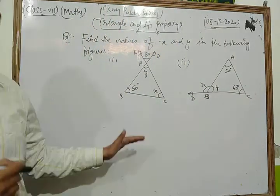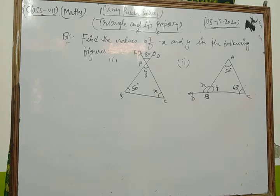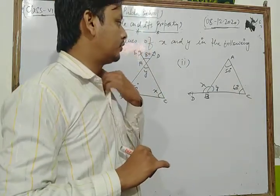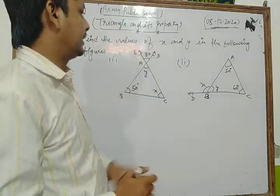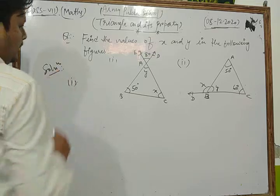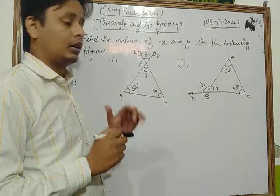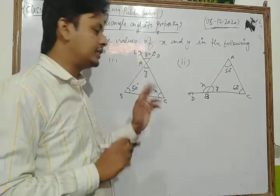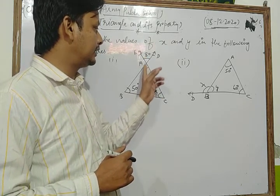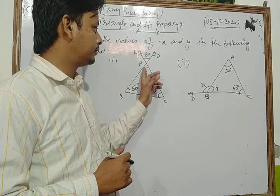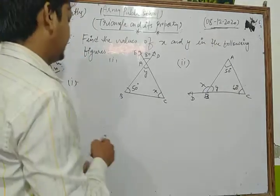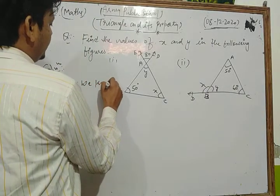Now let's solve the first part of this question. We know that when two lines intersect each other at a point, the vertically opposite angles are equal. In this figure, y and 80 degrees are vertically opposite angles, so y is equal to angle EAD, which is 80 degrees.